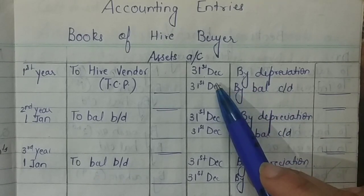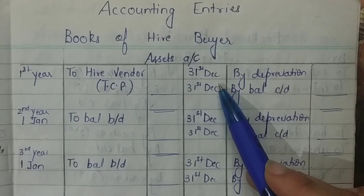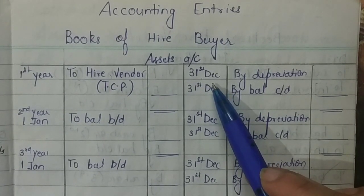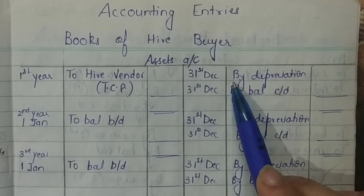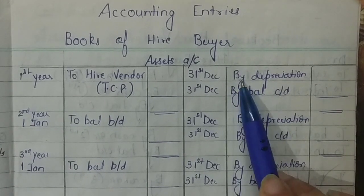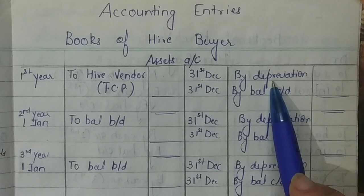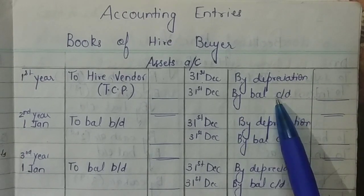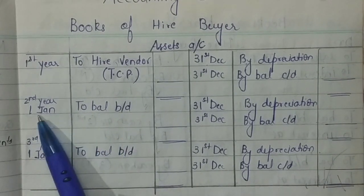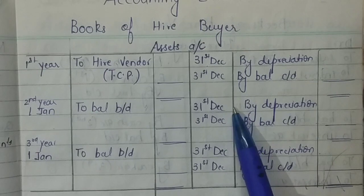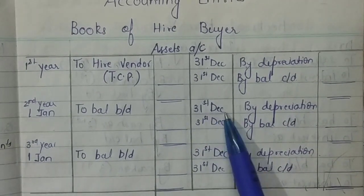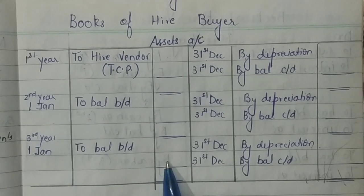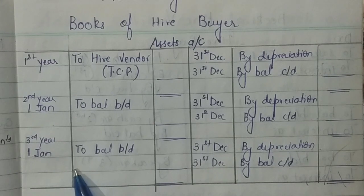Depreciation is charged on the last working day — so it can be 31st December if the books are closed on 31st December, or 31st March if the books are closed on 31st March. As per the latest income tax rules, books are required to be closed on 31st March, which is the financial year end. We will write either 31st December or 31st March as per the requirement of the question. The entry will be: by depreciation — since journal entry is depreciation debited to asset, depreciation appears on the asset account's credit side. The remaining balance is recorded as balance carried down, and next year opened as balance brought down.